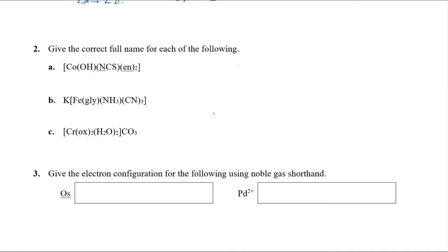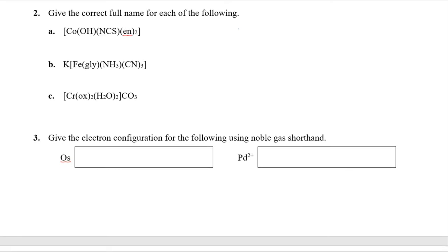There's going to be naming on the exam — I promise — so if you miss points on naming, shame on you. You know these rules; we've been doing this since the first week. For this complex, catalog your ligands first: ethylenediamine is bidentate with zero charge; the isothiocyanato ligand is negative one; and hydroxyl is negative one. The overall complex appears to be neutral.